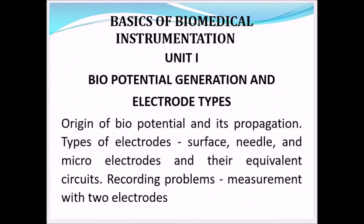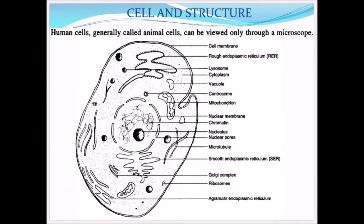Biomedical Instrumentation. The first unit we are going to discuss is bio-potential generations and electrodes, along with recording problems. Before studying bio-potentials, we should know what potential occurs in the cells. So for that, we should know the cells first. This is the structure of the cell, common to humans as well as animals, except plants. All living beings, humans and animals, will have the same type of structures.